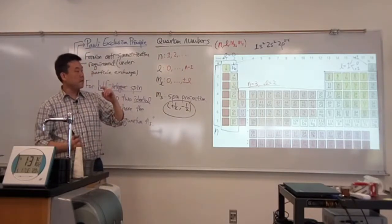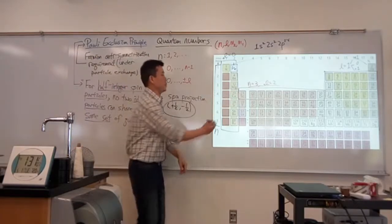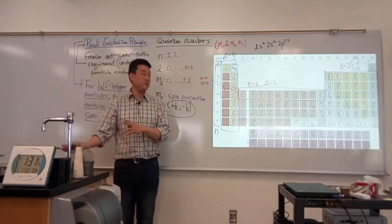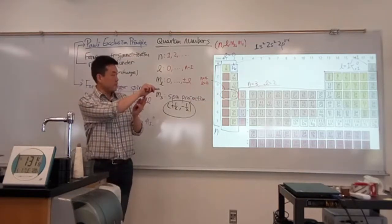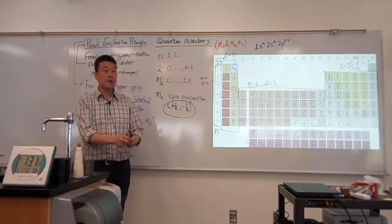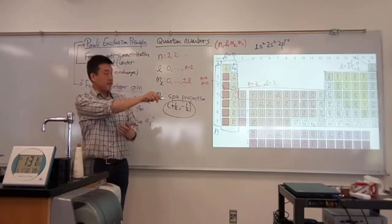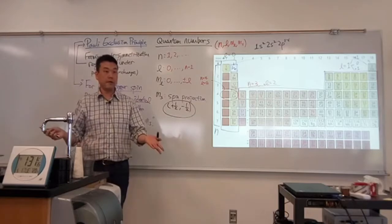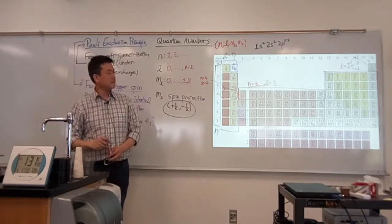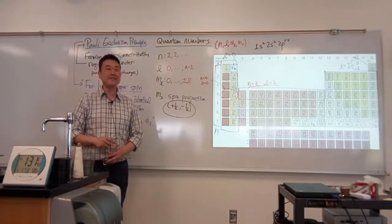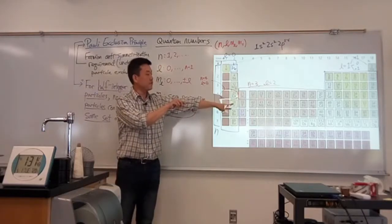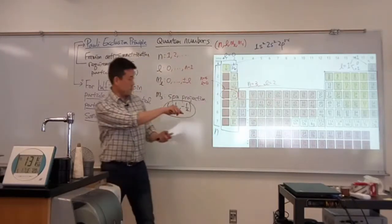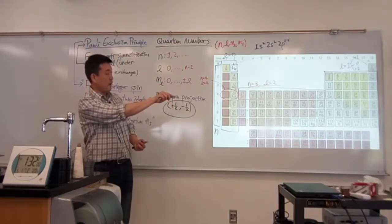Just to be clear: the transition metals don't have N=4 — they actually have N=3 and L=2 quantum numbers, as you can see in electron configuration notation written as 3d something. There's a bit of jumping in line here: the elements with N=4 and L=0 fill before the N=3 L=2 states, because it turns out the lowest energy state is not the one with lower N but higher L, but rather the one with higher N and smaller orbital angular momentum.